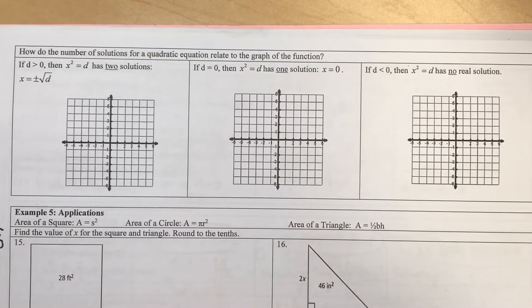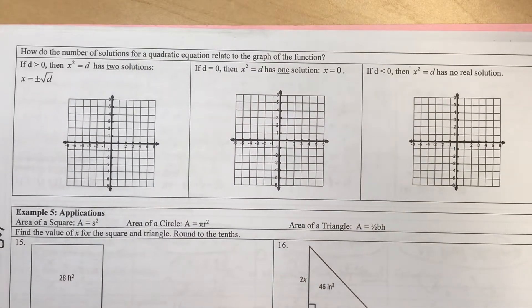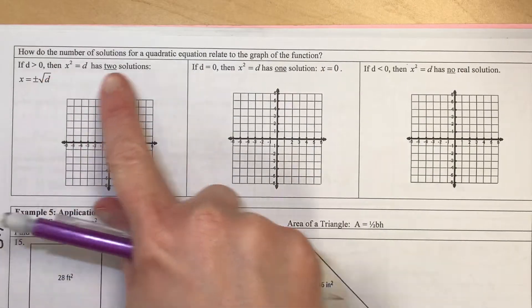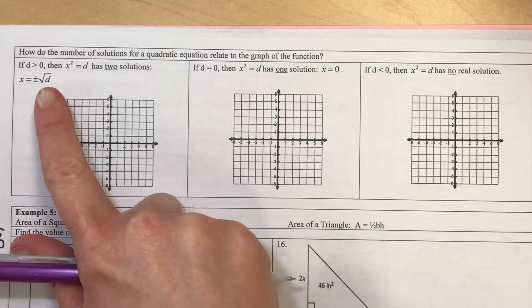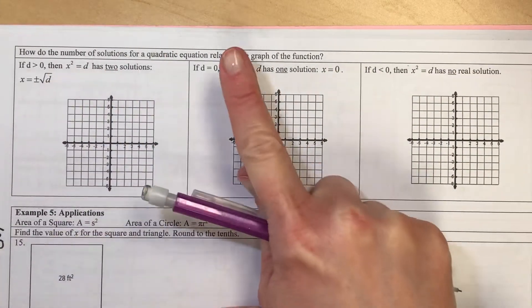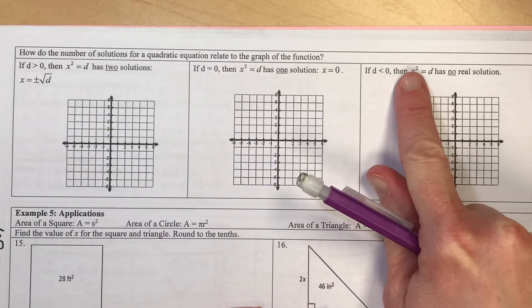In this video, I'm going to show you three pictures for when you're applying a square root to a positive number, the number zero, or a negative number.